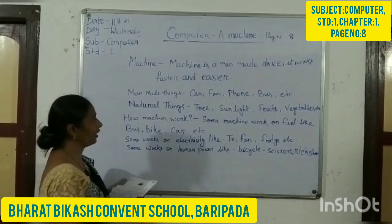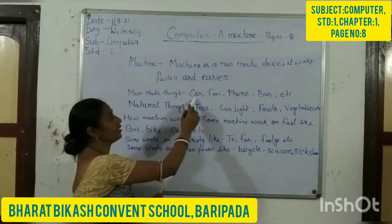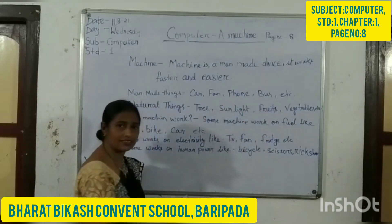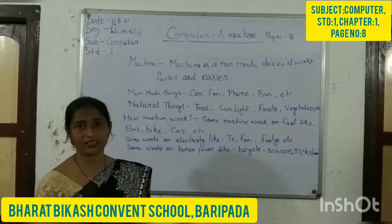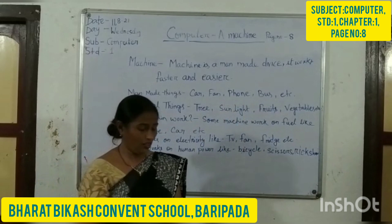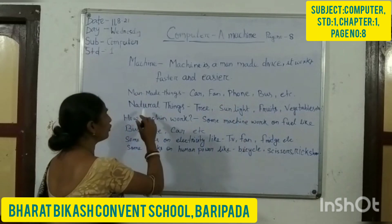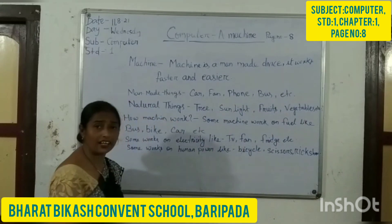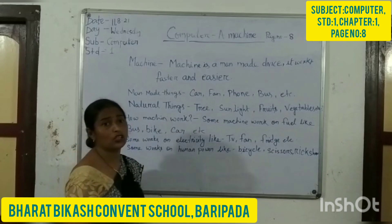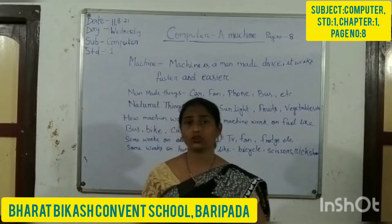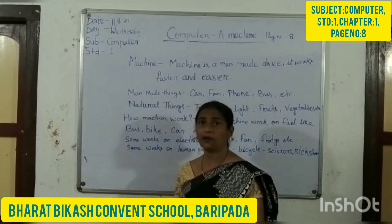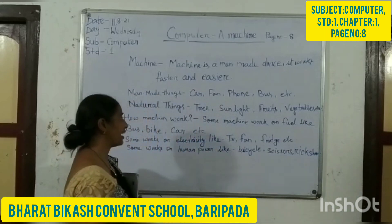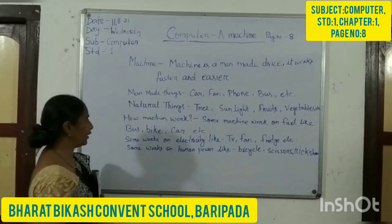Man-made things include car, bus, and so on — these are man-made things. And what are natural things? Sunlight, soil, fruits, vegetables, air — these things are natural. Okay?